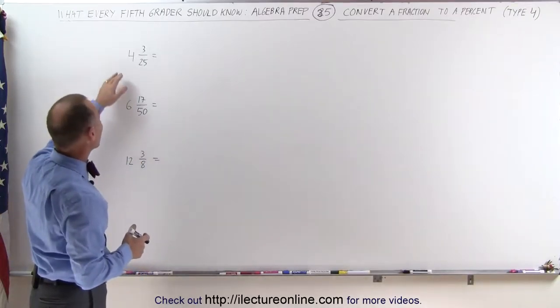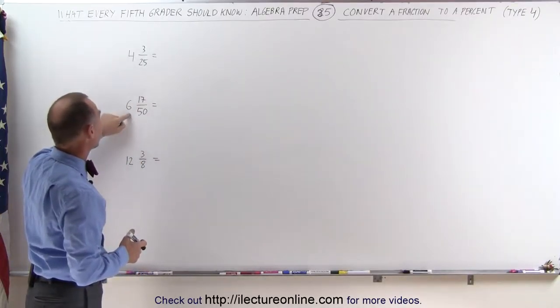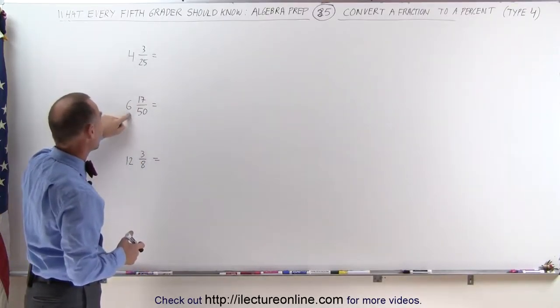Here we have the number 4 and 3/25, 6 and 17/50, and 12 and 3/8. How do we convert those to percentages?